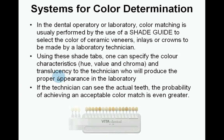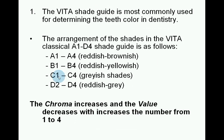There are several systems for colour determination. In the dental operatory or laboratory, colour matching is usually performed by the use of a shade guide to select the colour of ceramic veneers, inlays or crowns. Using these shade tabs, one can specify the colour characteristics — hue, value, chroma and translucency — to the technician, who will produce the proper appearance in the laboratory. The Vita shade guide is the most commonly used for determining tooth colour in dentistry. The arrangement of the Vita classical A1–D4 shade guide is: A1–A4 reddish-brownish, B1–B4 reddish-yellowish, C1–C4 greyish, and D2–D4 reddish-grey. The chroma increases and value decreases with increasing number from 1 to 4.